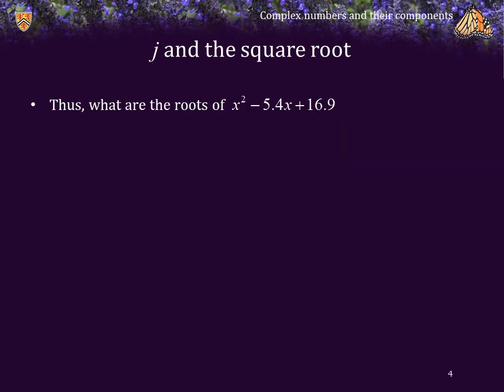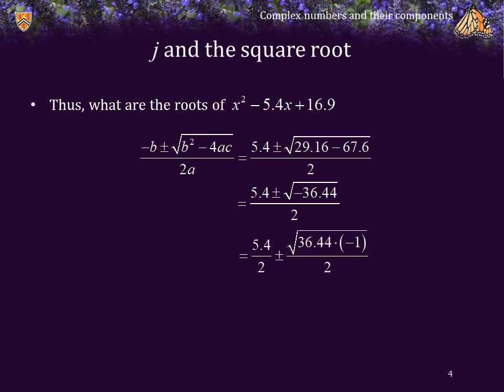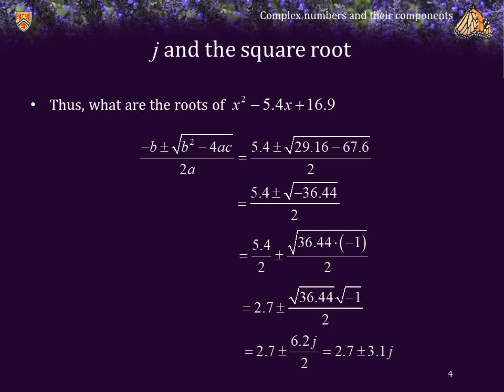Let's use this to calculate the roots of a quadratic polynomial using the quadratic formula. Plugging in the coefficients and working out 4ac, we combine what's under the square root, then write what's under the square root as a product of a positive number times negative 1. We simplify the real component and expand the two square roots. The square root of 36.44 is 6.2, and so the roots of that quadratic polynomial are 2.7 plus or minus 3.1j.